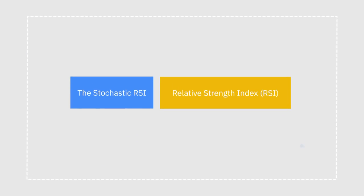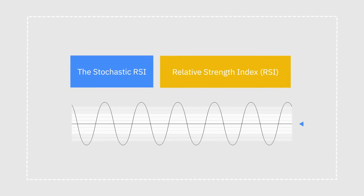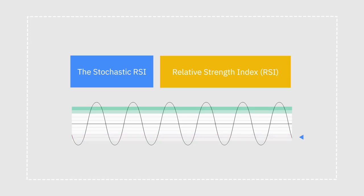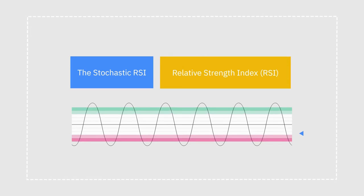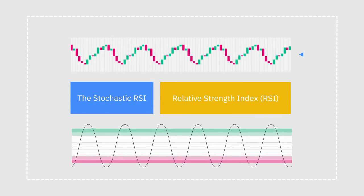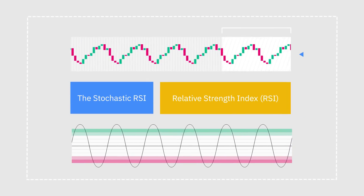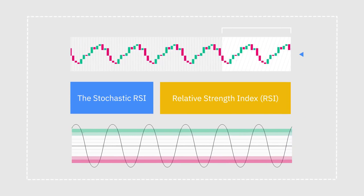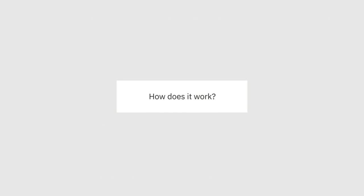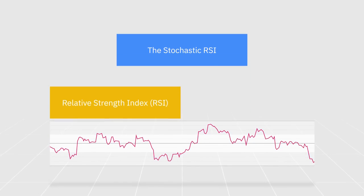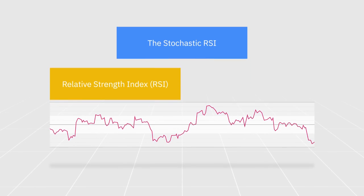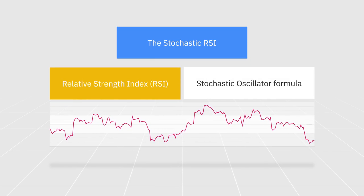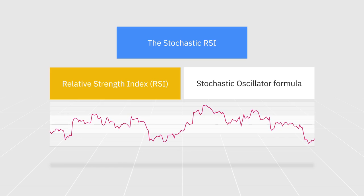Both of these indicators are oscillators used to identify overbought and oversold conditions by measuring changes in the price of an asset over a given time period. The stochastic RSI is generated from the ordinary RSI indicator by applying the so-called stochastic oscillator formula.